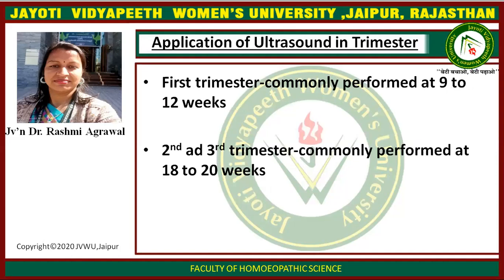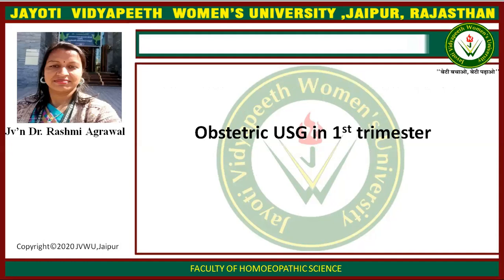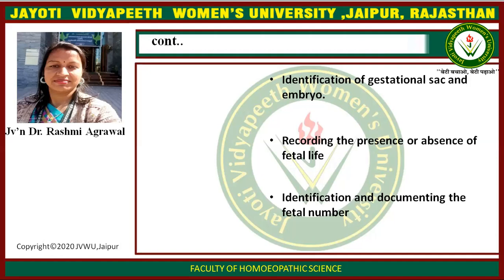Now we learn about USG applications in a trimester-wise manner, covering the first trimester and the second and third trimesters. In the first trimester, USG is commonly performed at 18 to 20 weeks for identification of the gestational sac and embryo, and for recording the presence or absence of fetal life.